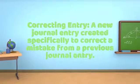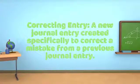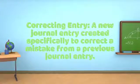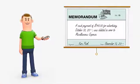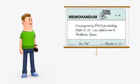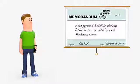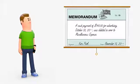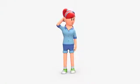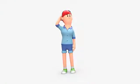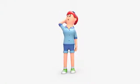A correcting entry is a new journal entry created specifically to correct a mistake from a previous journal entry. Because these journal entries are simply correcting a previous mistake, there are no source documents for them. This means that a memorandum is used as the source document for correcting entries.